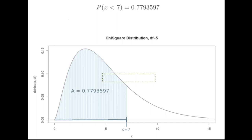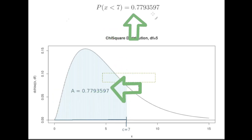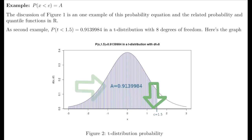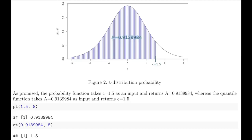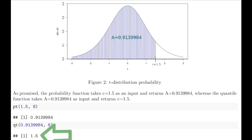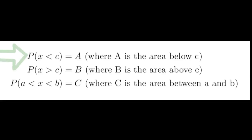The chi-squared example looks at the probability where x is less than some constant, equal to an area. Here's a t-distribution example: the probability that t is less than 1.5 is equal to around 91%. The pt function of 1.5 returns that 91%, and qt of that 91% with 8 degrees of freedom returns the 1.5. So if the problem comes from this first type, the built-in probability and quantile functions in R solve it.